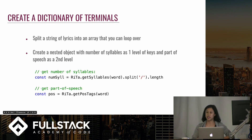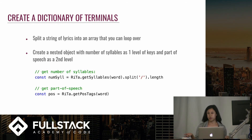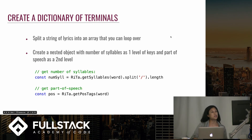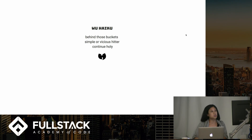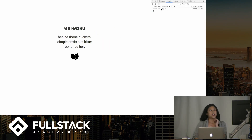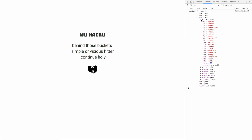To start making this haiku generator, I first had to create a dictionary of terminals — of words. I took a long string of lyrics and split it into an array, which I then looped over to create a nested object with one level of keys being the number of syllables, and the second level of key being the part of speech. Here's my terminals object, and if I open it up, all of these keys represent the number of syllables, and if I open up 'three' and then 'adjective', I have a list of all the adjectives that are three syllables in my dictionary.